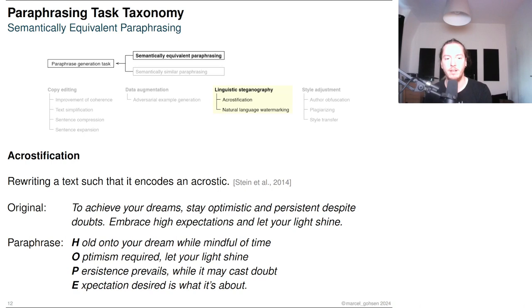An acrostic is a word or phrase that can be formed by concatenating the initial letters of each line of a text and can be used to hide messages in text. Acrostification is to paraphrase a text to encode such an acrostic. In the example, a text is rewritten to encode the acrostic hope.